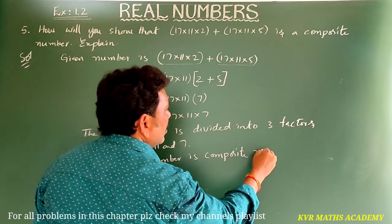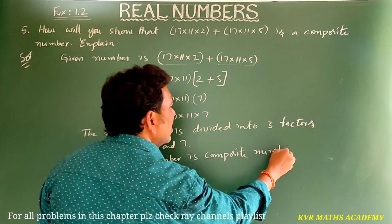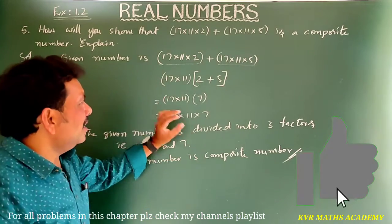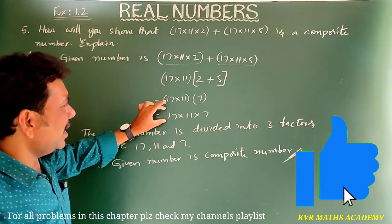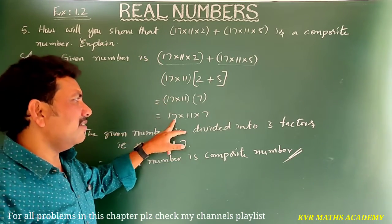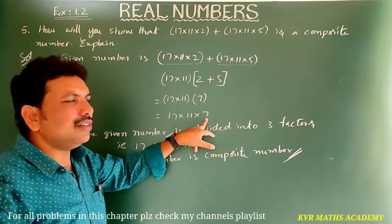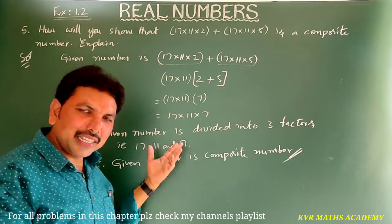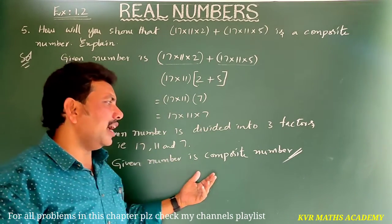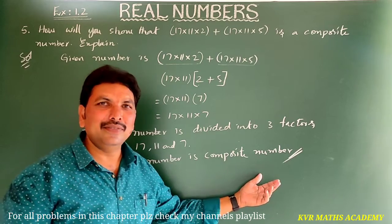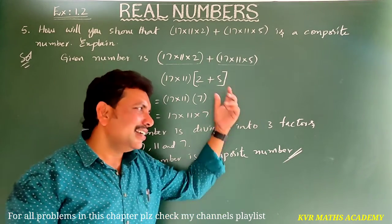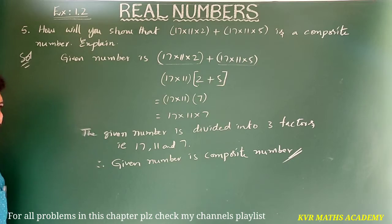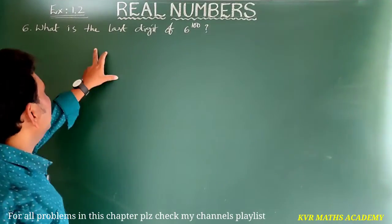The given number has been divided into 3 factors: 17 into 11 into 7. So the given number is composite. Have you understood clearly? Yes, note it down.